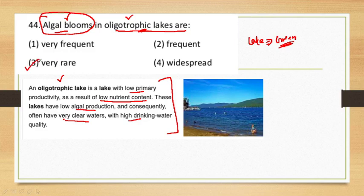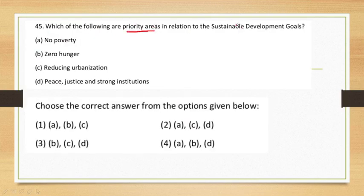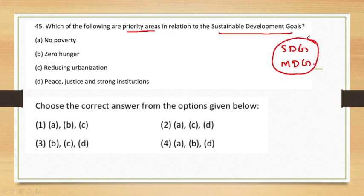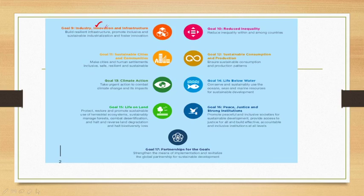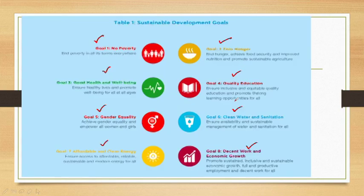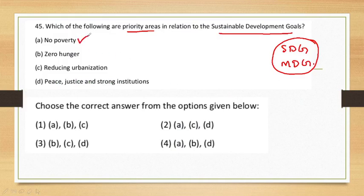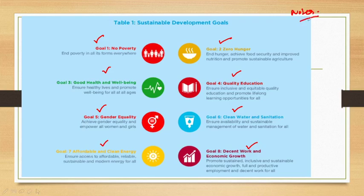Next question: Which of the following are priority areas in relation to Sustainable Development Goals? You have to study Sustainable Development Goals and Millennium Development Goals. The included goals are no poverty, zero hunger, and peace and justice — these three are among our SDG goals. Write these goals once in your notebook so that it will be easy to revise.